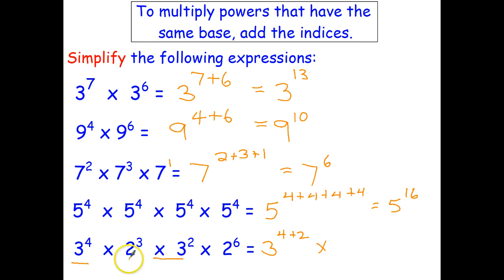And then times, and I can multiply 2 cubed times 2 to the 6th. And that's going to give us 3 to the power of 6 times 2 to the power of 9. So first index law. To multiply powers that have the same base, add the indices.